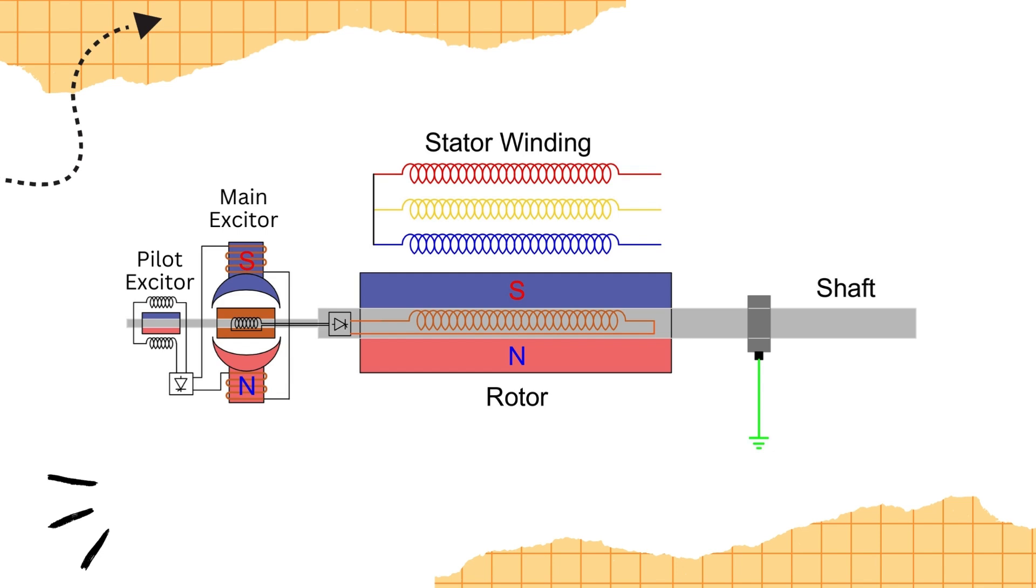The main exciter, also coupled with the main generator, generates AC voltage. This voltage is too rectified to DC and sent to the rotor field by a rotating diode arrangement. In both methods, the rotor body is grounded through a slip ring and brush arrangement.